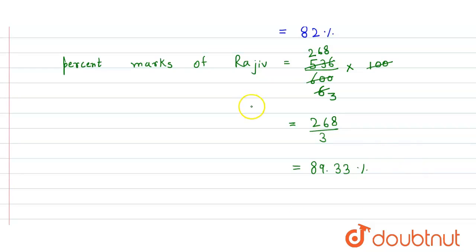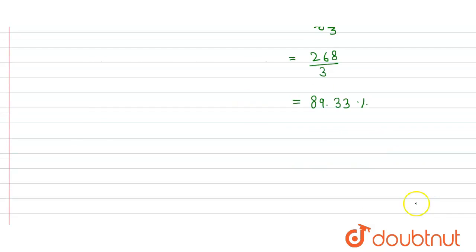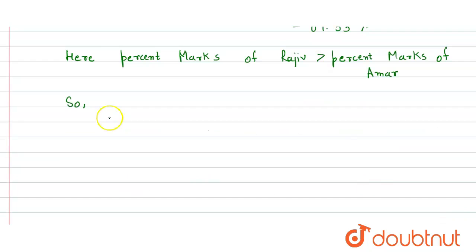So the performance of Rajiv is better than Amar. Rajiv has better performance, so that's our answer.